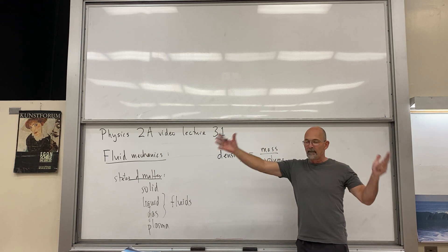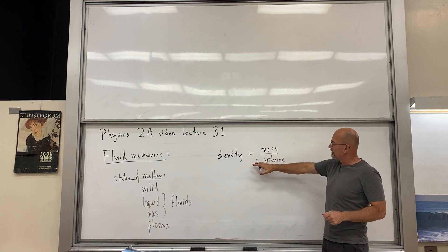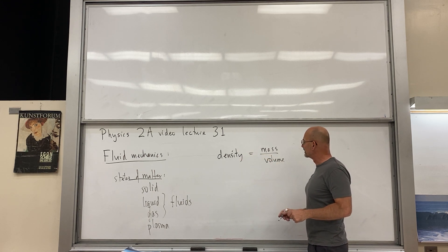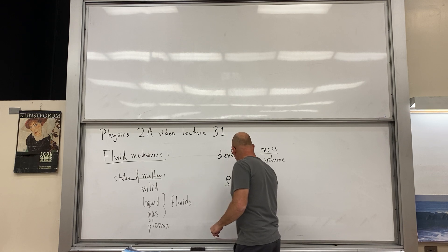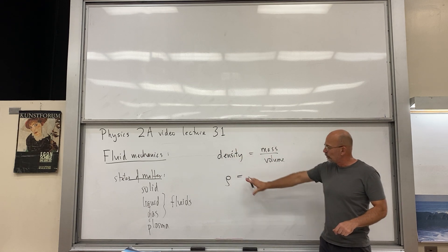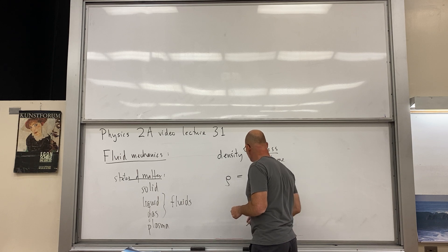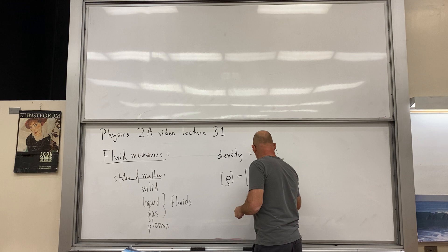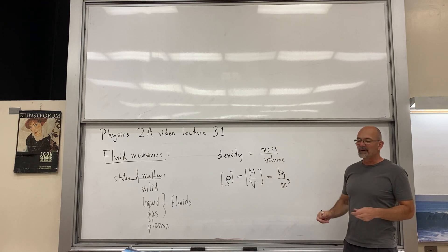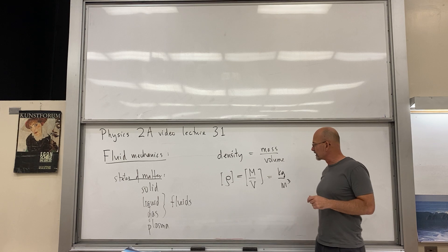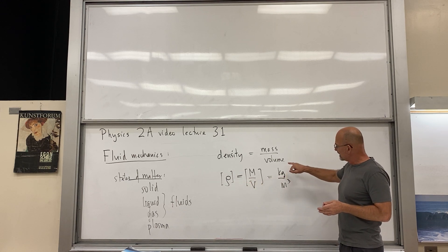You could have a tiny bit of water, a bucket, or an ocean — but density is a certain mass divided by a certain volume. We use the Greek letter rho (not p) for density, and the standard units are kilograms per cubic meter.